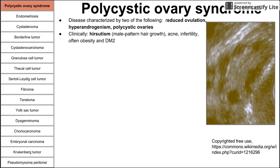Clinically, these patients present with hirsutism, which is male-patterned hair growth — usually hair on the trunk, chest, and face. You can also get acne, infertility, and it's often associated with obesity and type 2 diabetes mellitus. Obesity and diabetes usually have something to do with the pathogenesis of PCOS.